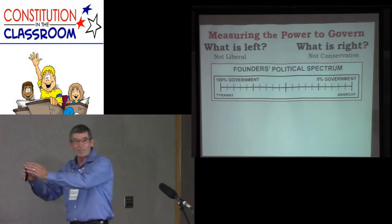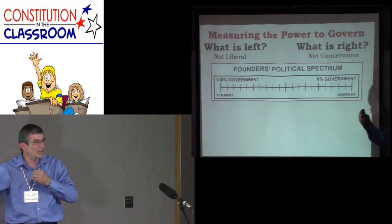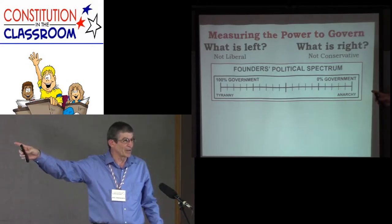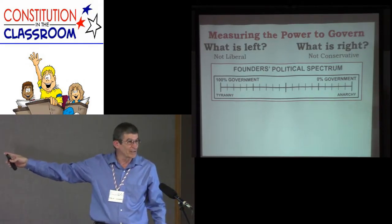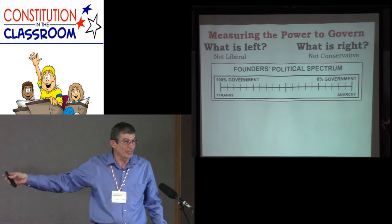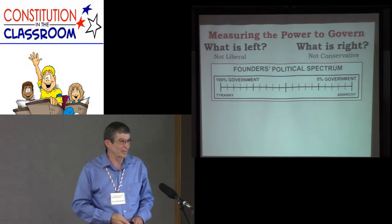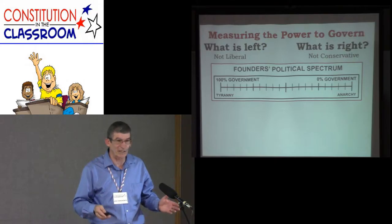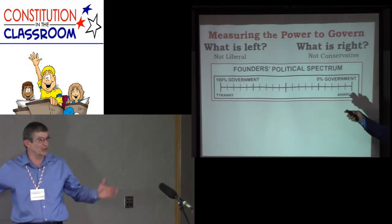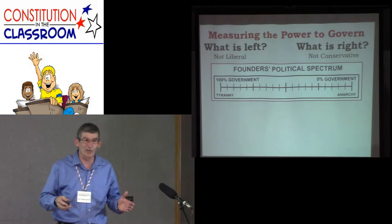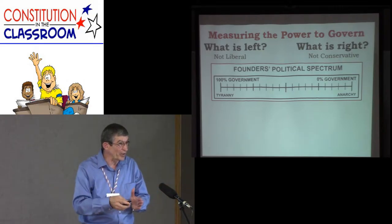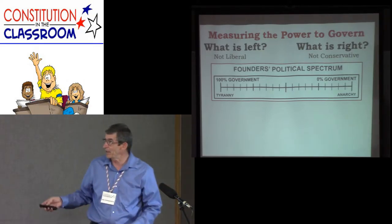Do we have a choice between those two extremes? We do, but we can't choose either of them — because none will give us a productive, safe life for a community. Somewhere between these two extremes is where the proper role of government should find itself. That's where we as a people have to make sure we know that and do what it takes to keep it aligned there correctly.